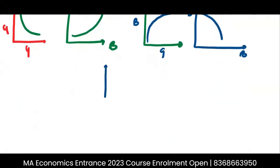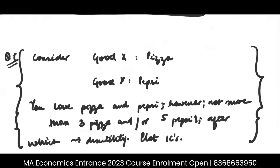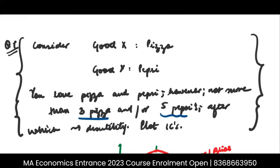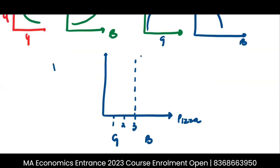Now let's apply the same thing here. It says after three pizzas it becomes a bad good, so I'm taking pizza on this axis: one, two, three — before and equal to three it is good, then it becomes a bad good. Similarly, after five Pepsis it becomes a bad good, so marking Pepsi: one, two, three, four, five, six — after the fifth unit it becomes a bad good. So my indifference curves should look like this.